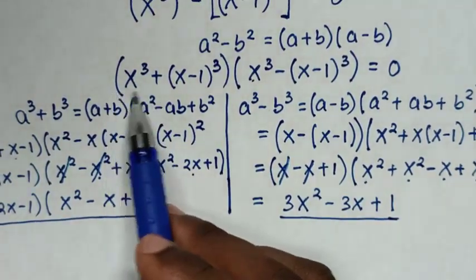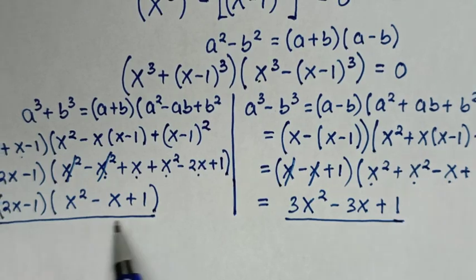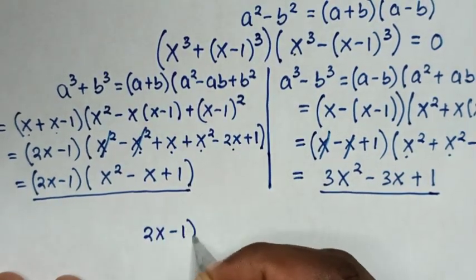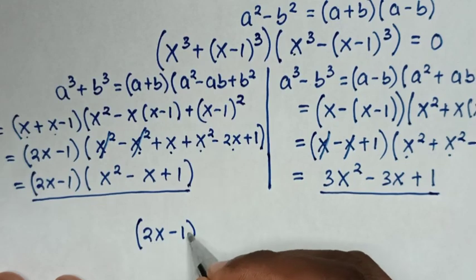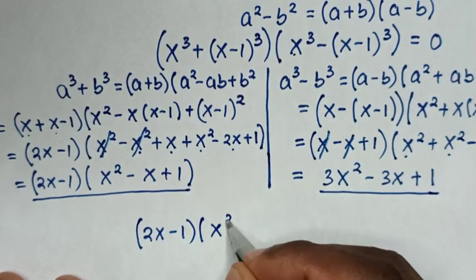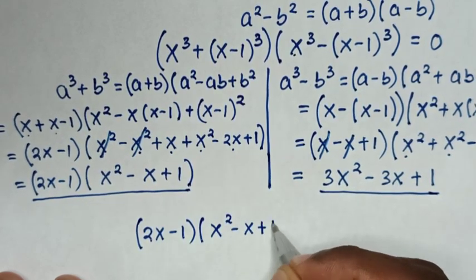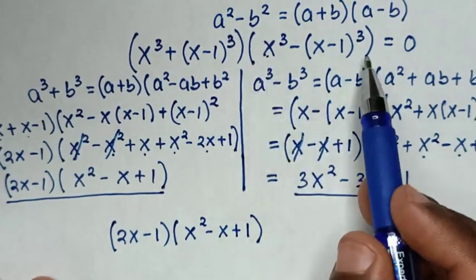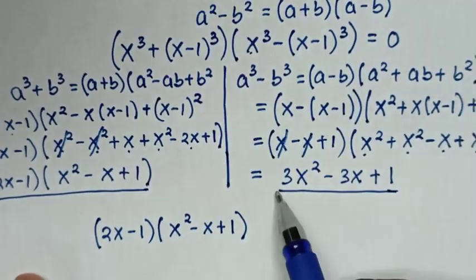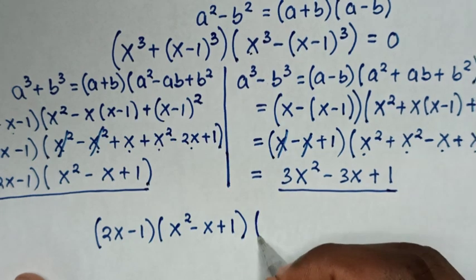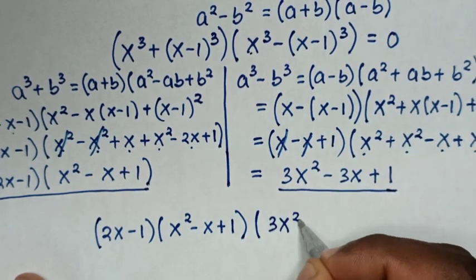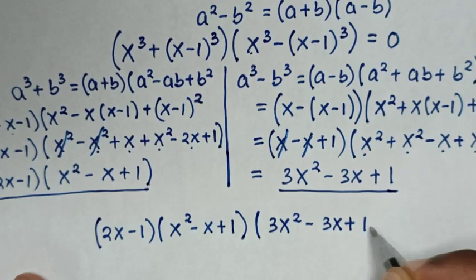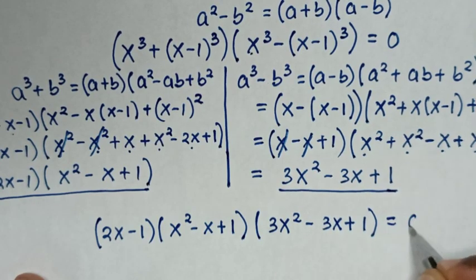Therefore, substituting both parts, our equation becomes (2x minus 1)(x² minus x plus 1)(3x² minus 3x plus 1) equals 0.